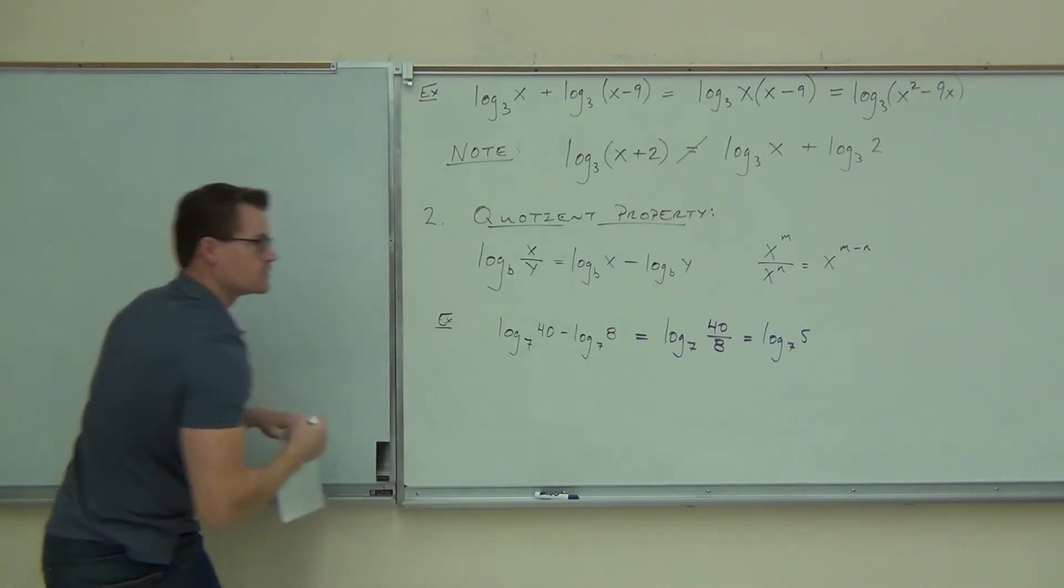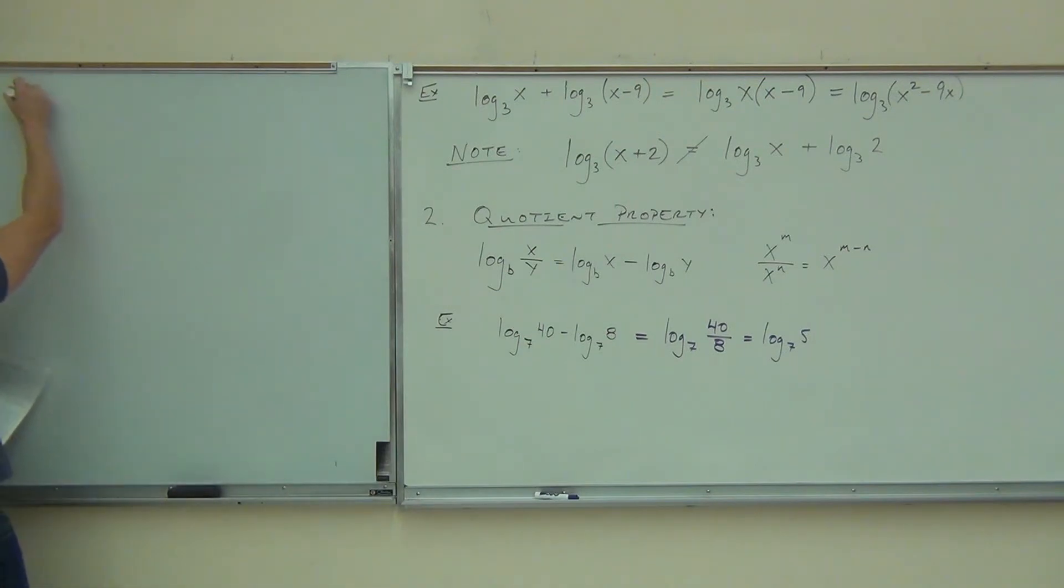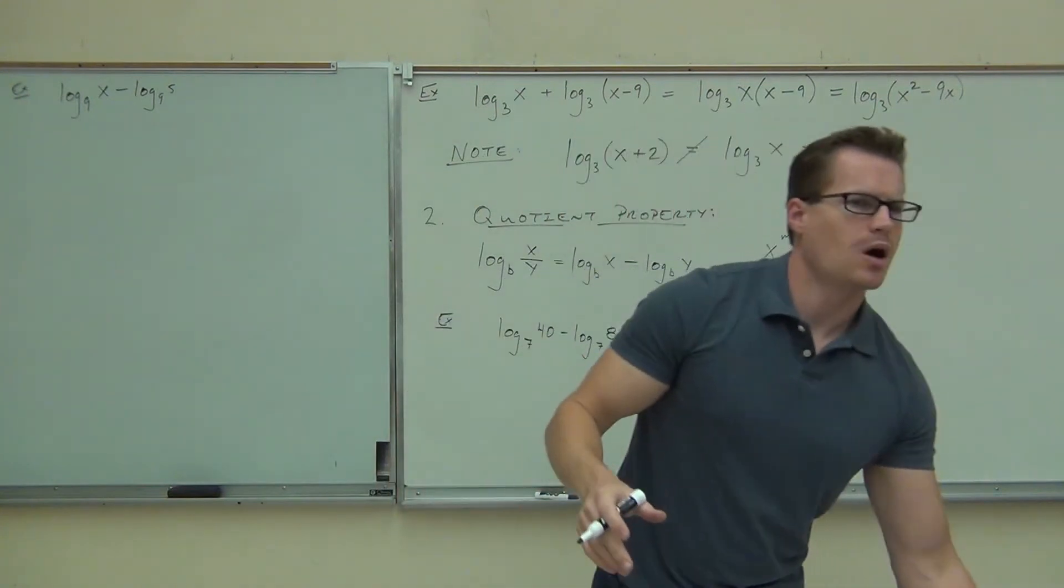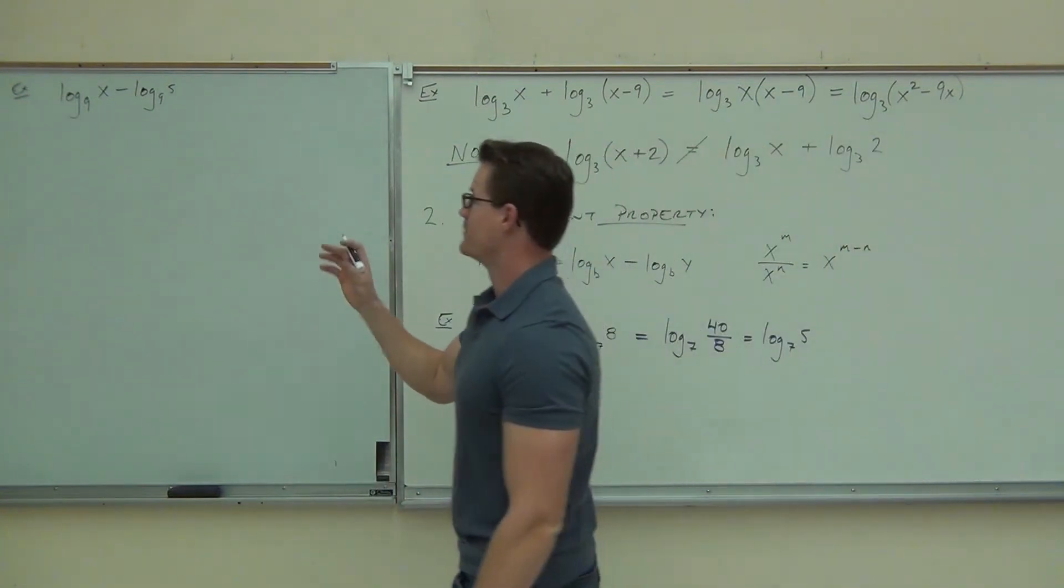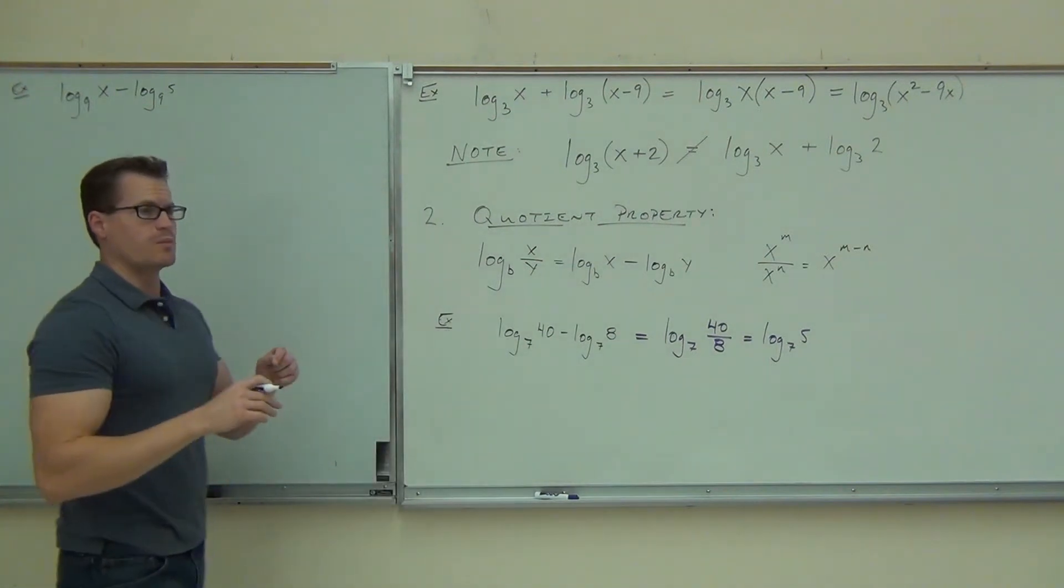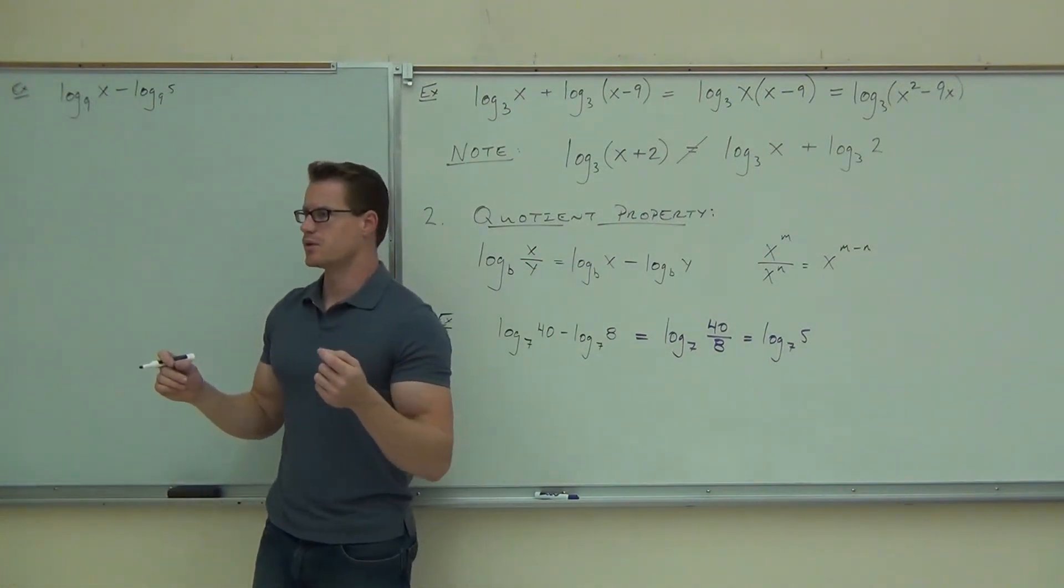Okay, let's do a couple more here. Let's do log base 9 of x minus log base 9 of 5. Now, clearly, we've got a couple logarithms that have the same base. We have 9 and 9. That's great. We're going to combine these. Are we going to be multiplying, subtracting, dividing, or adding? Which one?